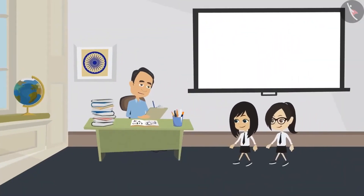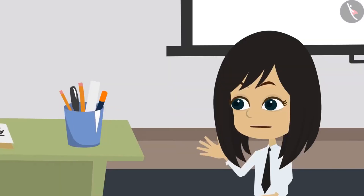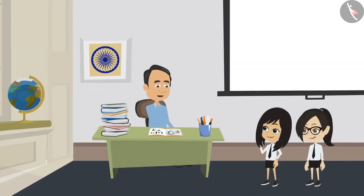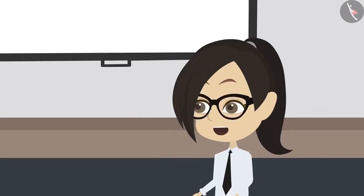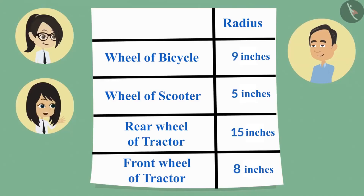Neha and Vandana, did you get some success in measuring the wheels you were talking about yesterday? Yes Sir, we measured all 4 wheels. So to measure the wheels, which properties of the circle did you measure? Sir, we measured the radius of all the wheels. Then let us see whatever you have measured. Here you are Sir. Yes, your measurements look right. Which wheel had the largest circle? The rear wheel of the tractor had the largest circle.